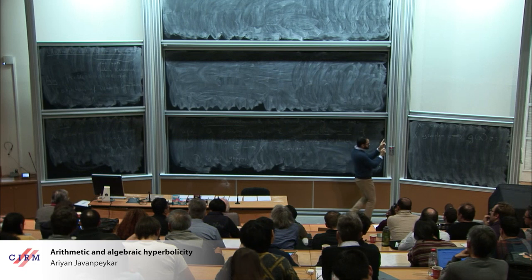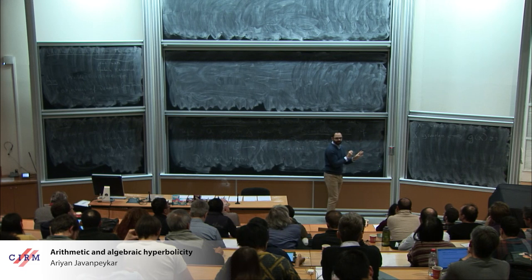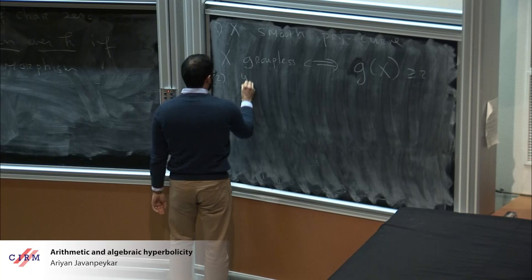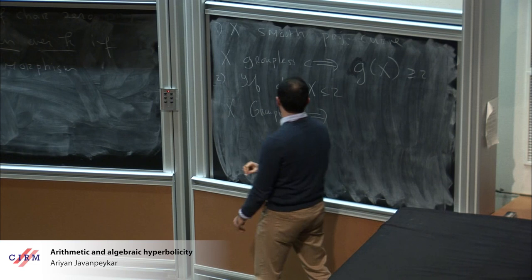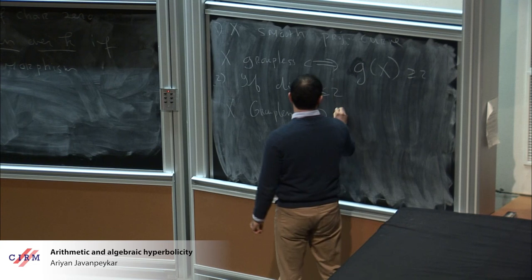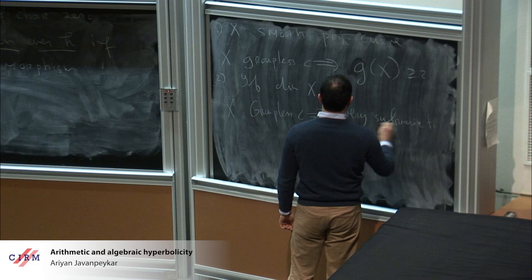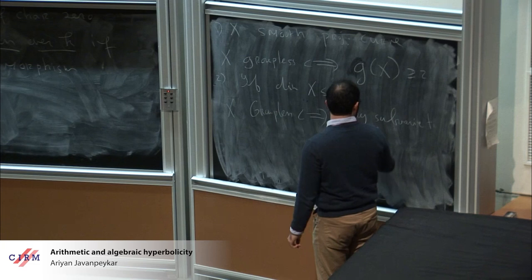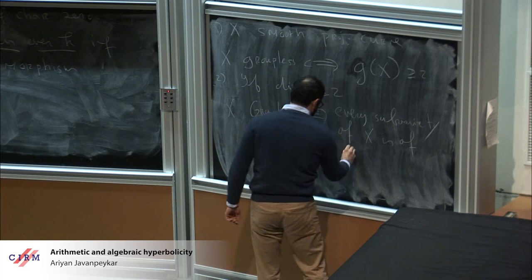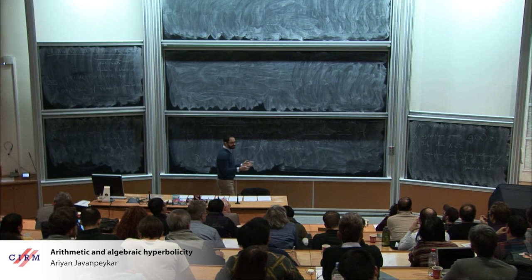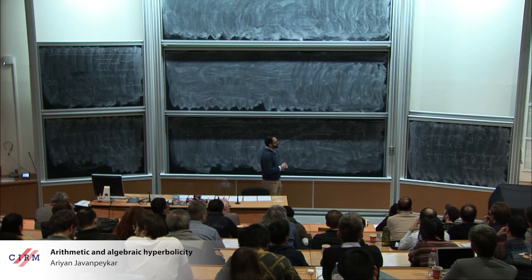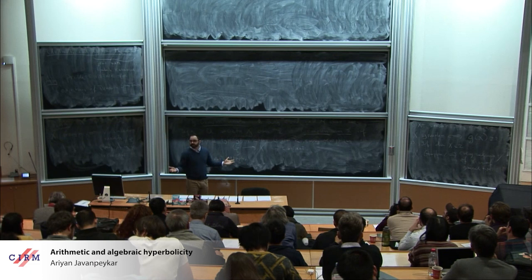Groupless surfaces are always of general type. If the dimension of x is at most two, then being groupless is the same as having the property that every sub-variety is of general type. This is an exercise with birational geometry: you need to realize that the Kodaira dimension of the resolution is non-negative, then use something about K3 surfaces to exclude them, then something about Kodaira dimension one always admitting an elliptic fibration, and then you're in Kodaira dimension two.